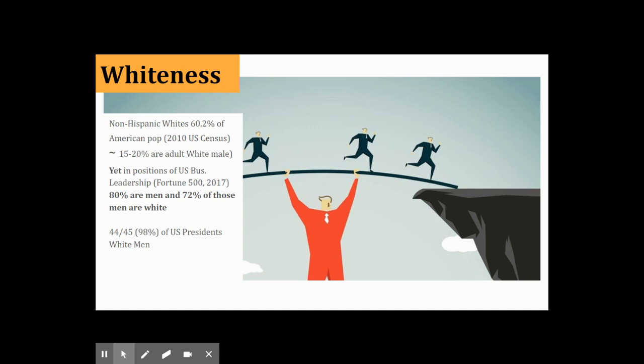Whiteness — one of our last characteristics. Non-Hispanic white people comprise 60% of the U.S. population as of 2010, with a new census this year that may change that number. If 60% are white, roughly 15 to 20% of our entire population are adult white males. Yet in Fortune 500 leadership positions as of 2017, 80% of all leaders are men, and 72% of those leaders are white men. And 44 of the 45 U.S. presidents have also been white men.